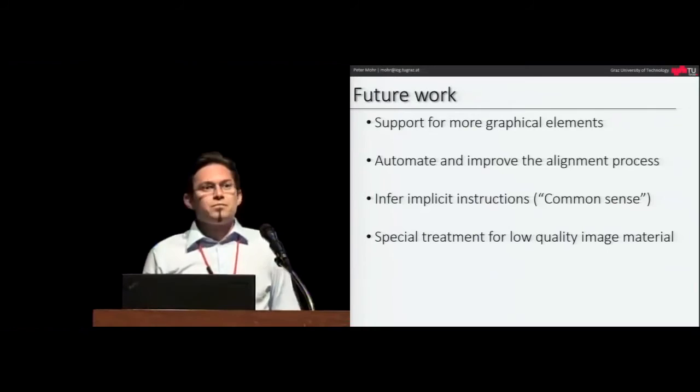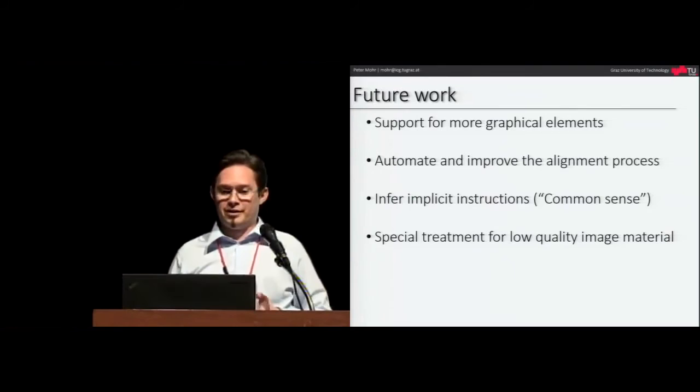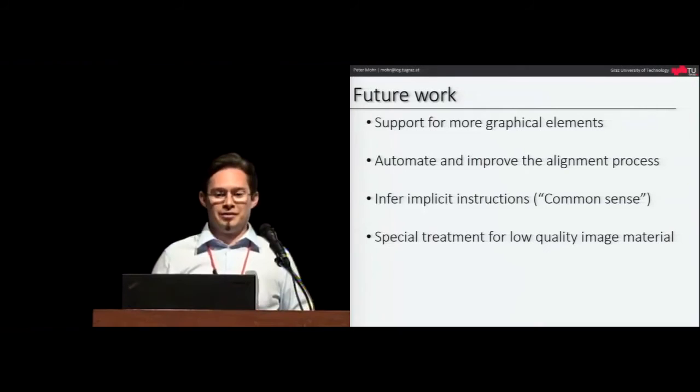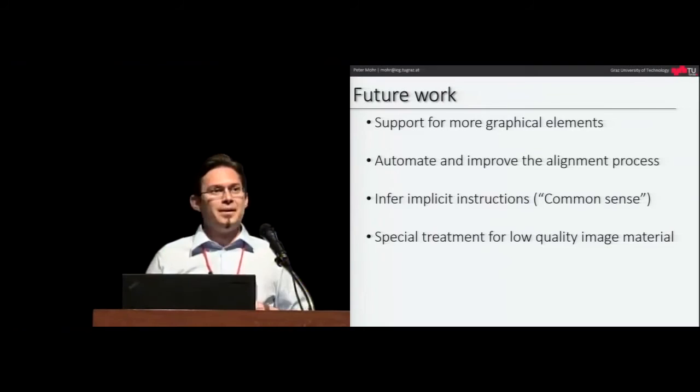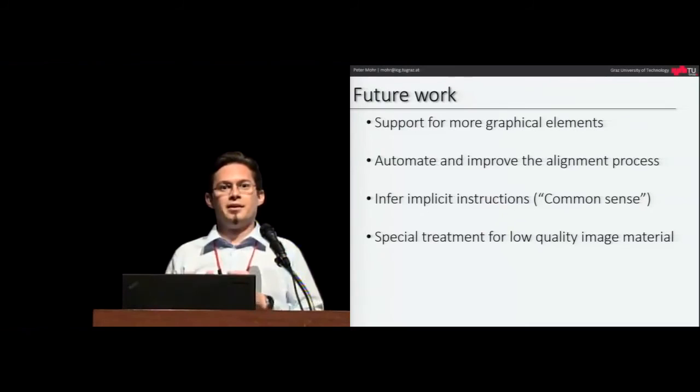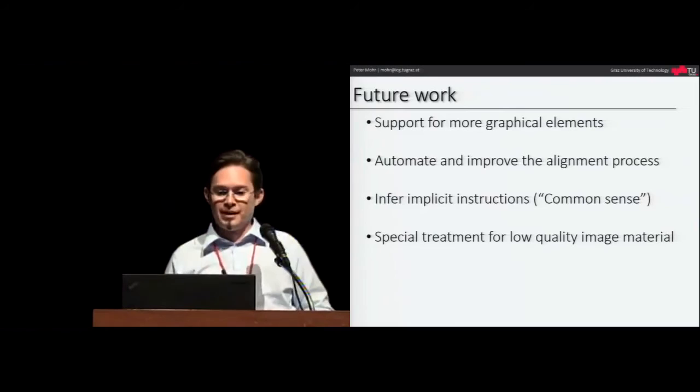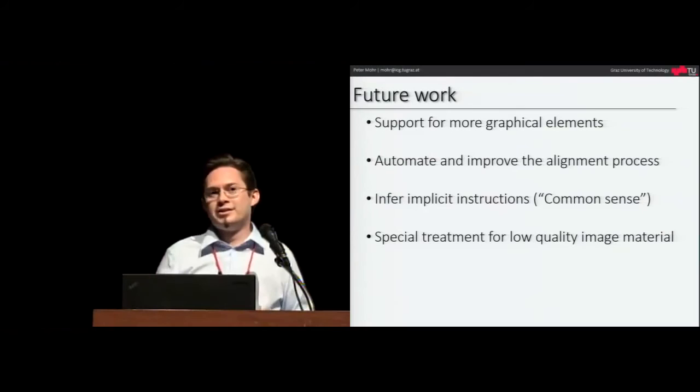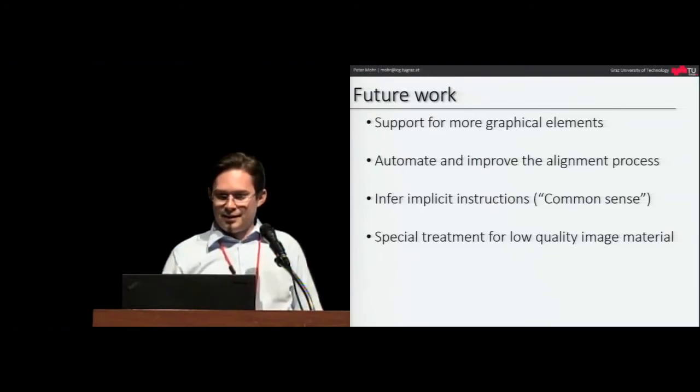So what is there to do? Of course these are not all elements which occur in instruction manuals. It's probably more, and we would need to investigate further elements. And I want to say that the alignment process is the only thing where a user actually is involved. But we are trying hard to remove that step as well, so the entire process is automatic. And we also want to give the system some kind of common sense, so it can infer implicit instructions. Like if you remove, I don't know, the upper piece of an object, and you need to remove some screws out of the way, the system should infer that instruction, that it could be possible. And we also want to think about really old manuals, like maybe old car engines, where the documentation material is really bad, maybe just photocopies. And that would need special treatment on the vision side. Okay, thank you, I hope you enjoyed the talk.